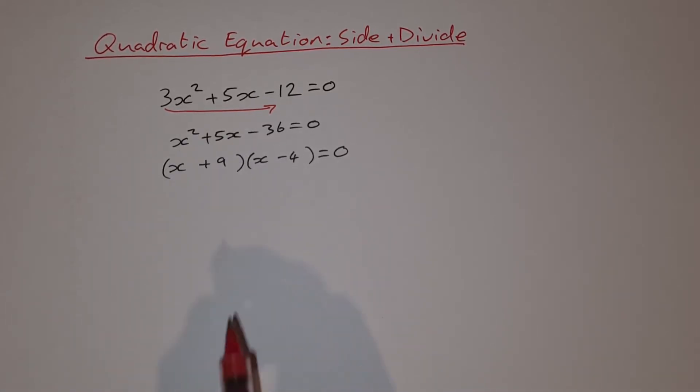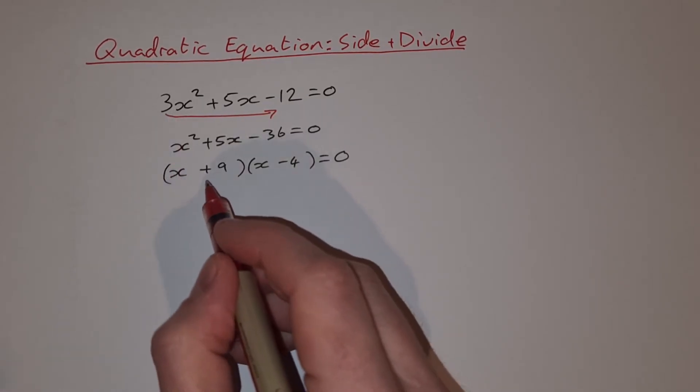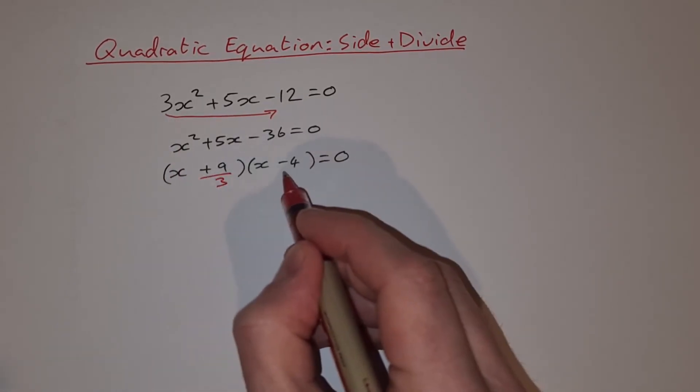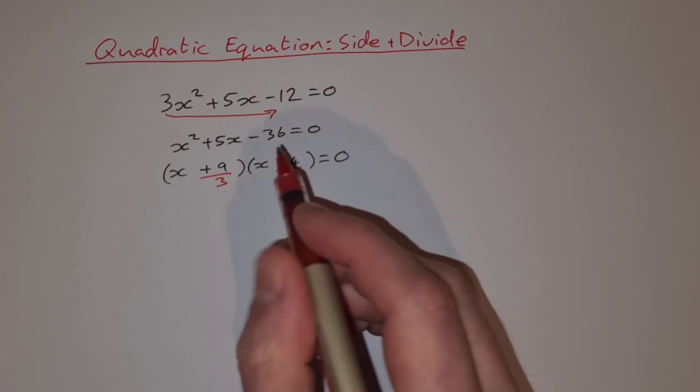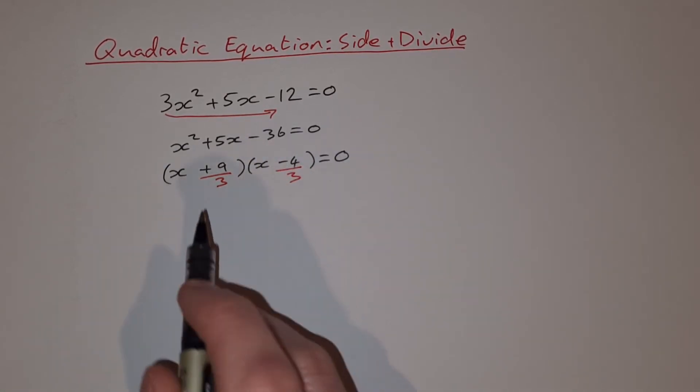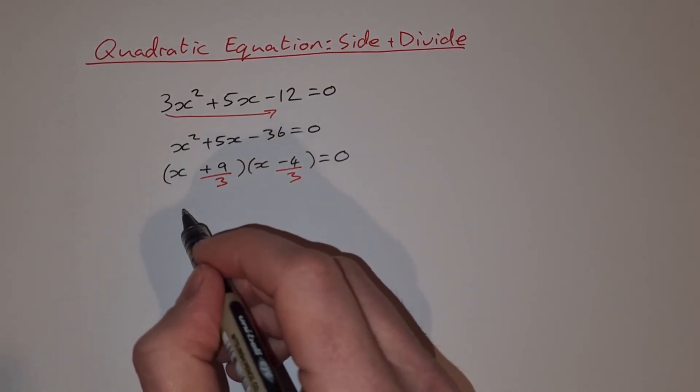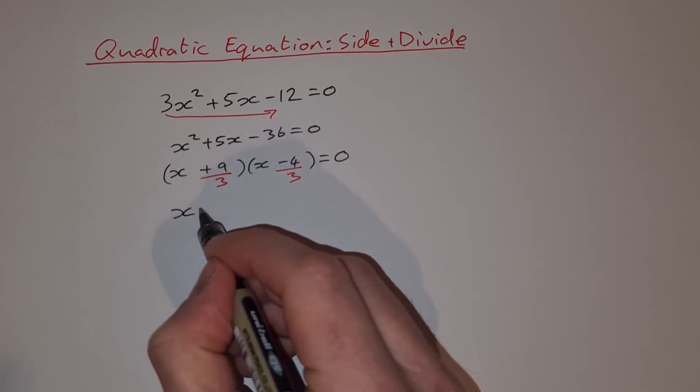Now for the divide, what we're going to do is we're going to divide by this 3 now. We're going to divide by 3 here and we're going to divide by 3 here. So in the first bracket, that works out fine. 9 divided by 3 is 3, so I get x plus 3.